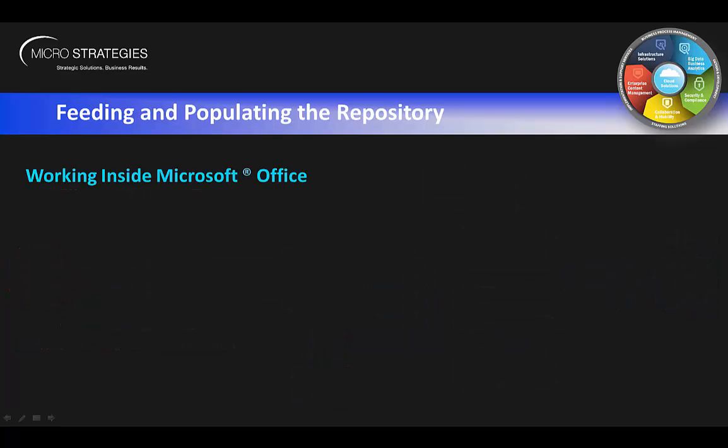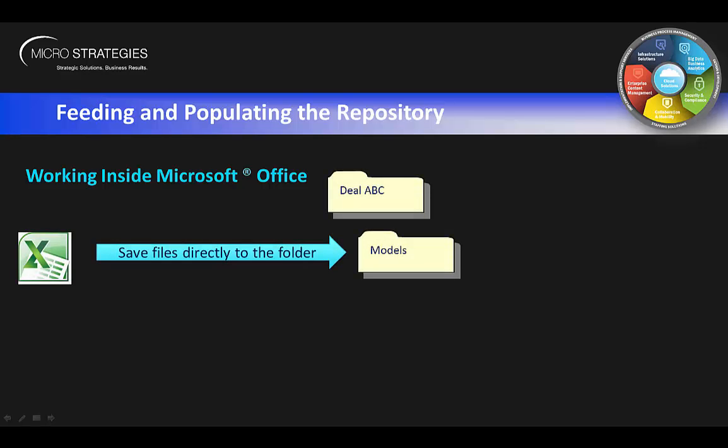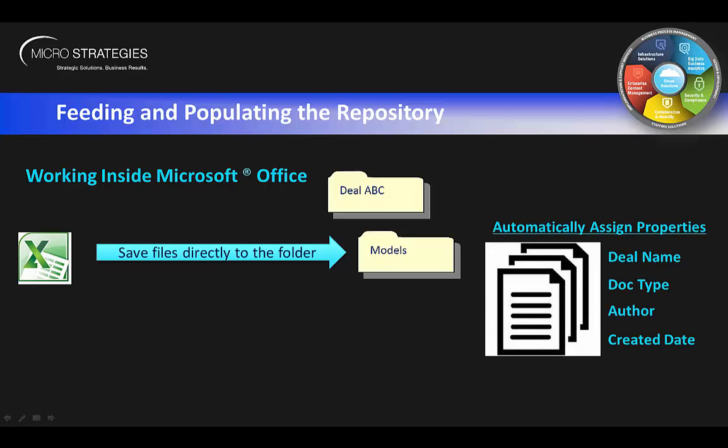Also when talking about feeding the repository, there's working inside Microsoft Office. Everybody works inside Microsoft Office — working in Excel is common practice. You're able to save to Alfresco right from within Excel, saving it to the models folder, not unlike saving to a folder on your drives. When they save to the models folder, it will automatically assign document properties: deal name, doc type, author, and created date. All the user did was hit save, this time to Alfresco, and now they've got all these metadata fields they can search on.